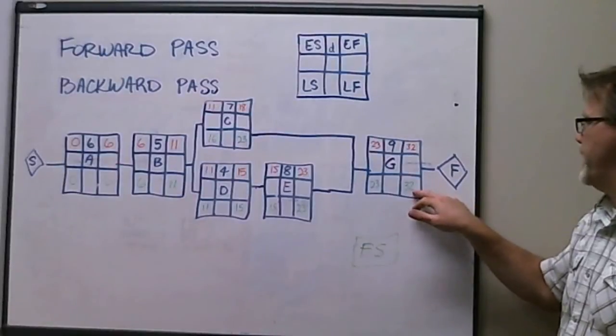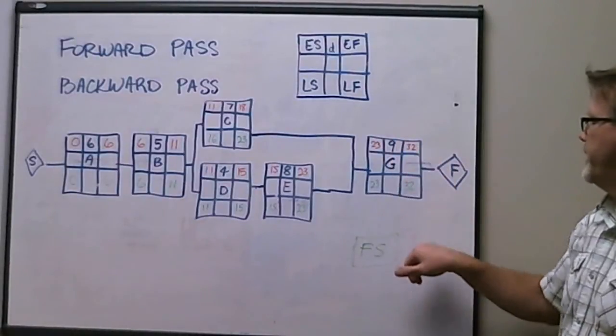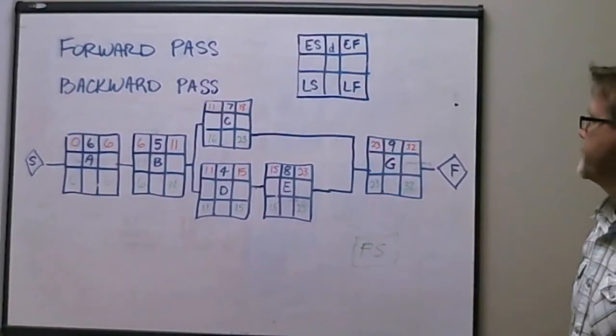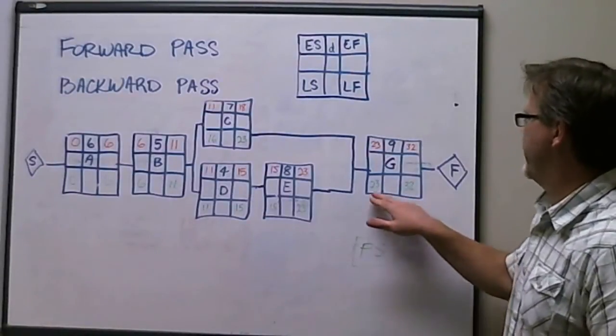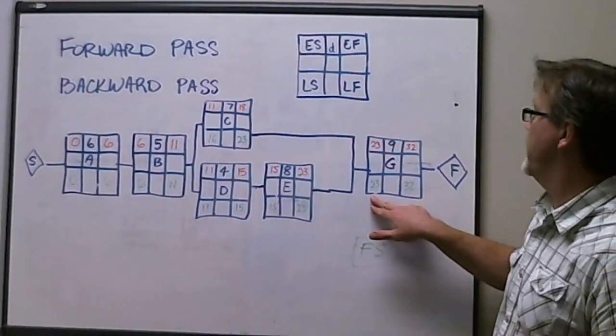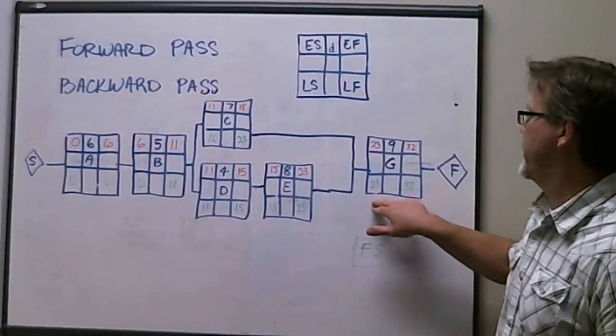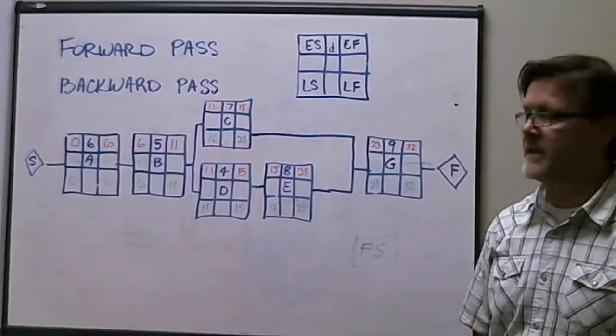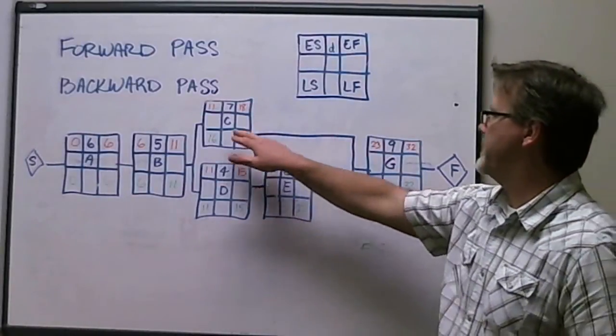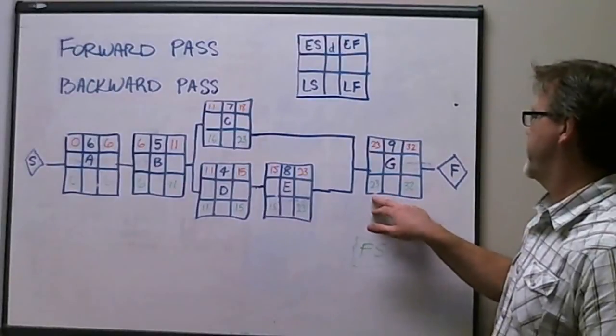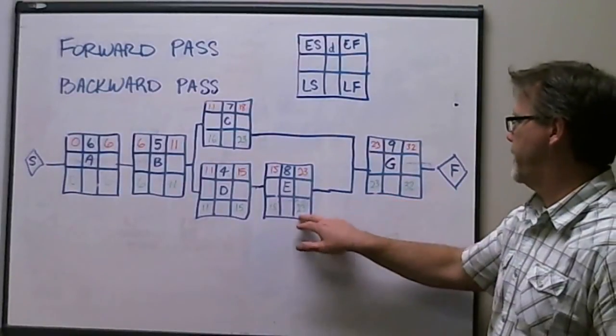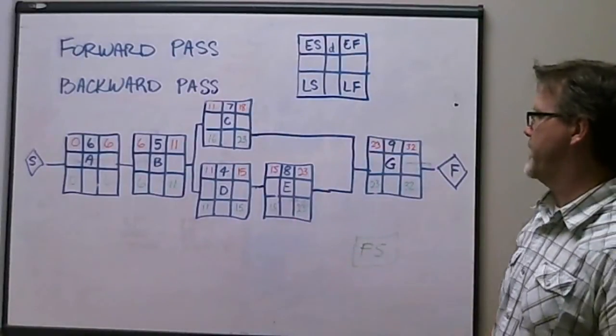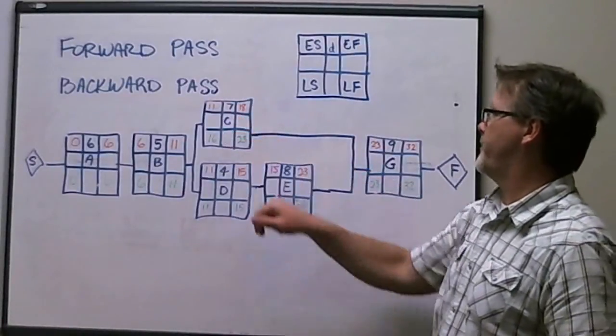So our late finish date of 32 days, less 9, is a late start date of 23. Late start date of 23 then is carried over to the late finish dates for the prior predecessor activities, which again are E and C. We carry that late start date down to here, to 23. So now 23 becomes the late finish date for activity E and the late finish date for activity C.